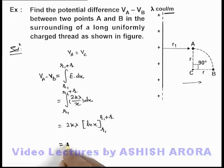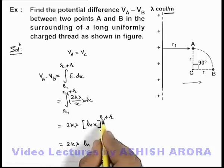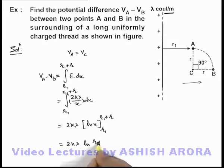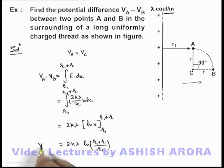And if we substitute the limits it'll be 2kλ ln of r_1 plus r by r_1. So this will be the value of the potential difference V_A minus V_B that'll be the answer to this problem.